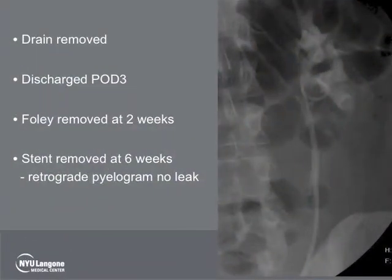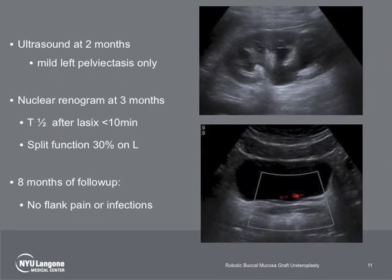The patient had an uncomplicated post-operative course. The drain was removed and she was discharged on post-operative day 3 with a Foley catheter. The Foley was removed after 2 weeks and the stent after 6 weeks. Follow-up ultrasound at 2 months showed mild left pelvicaliectasis with a robust ureteral jet. A nuclear renogram at 3 months post-operatively demonstrated prompt drainage with Lasix.